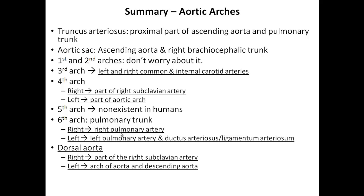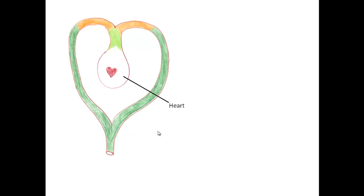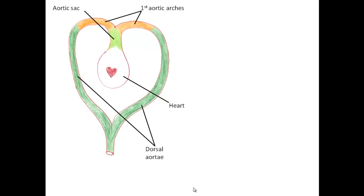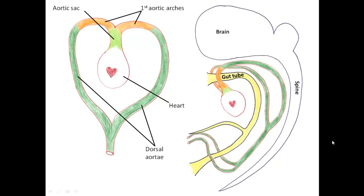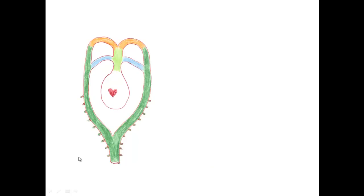Now let's look at how it actually looks. Starting with a stylized drawing: the heart leads to the aortic sac. Early in development, the first aortic arch forms on each side, meeting the dorsal aorta and flowing to a single dorsal aorta further down. Viewed obliquely, blood travels from the heart through the aortic sac to the first arch and along the dorsal aorta, located dorsal to the gut tube and ventral to the developing brain and spine. Moving further along, the second aortic arch appears in addition to the first.